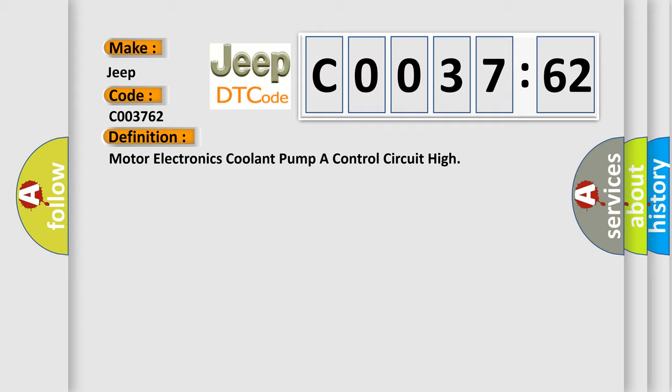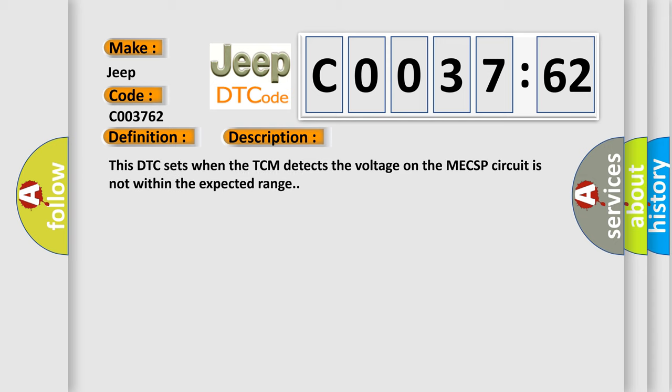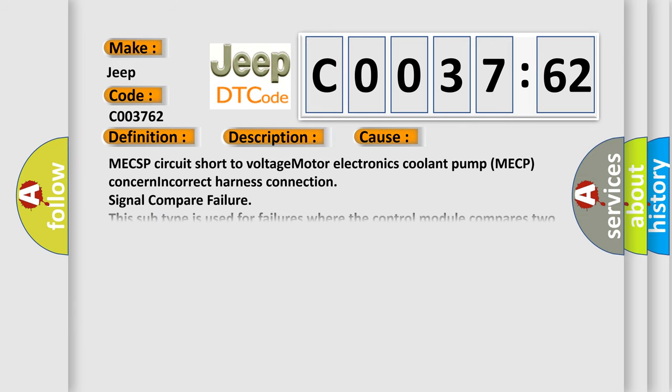The basic definition is Motor electronics coolant pump control circuit high. And now this is a short description of this DTC code. This DTC sets when the TCM detects the voltage on the MECSP circuit is not within the expected range. This diagnostic error occurs most often in these cases.